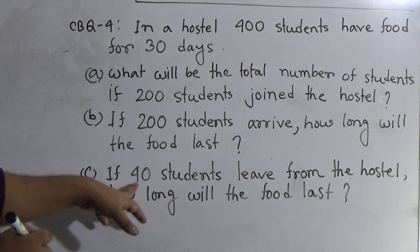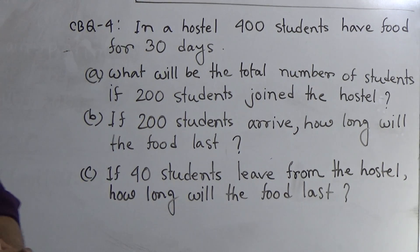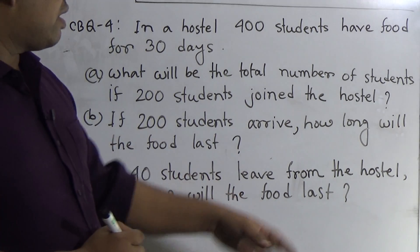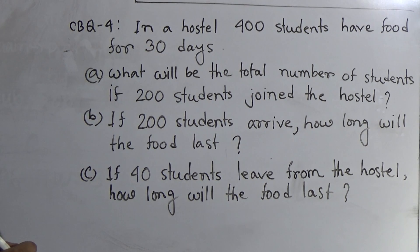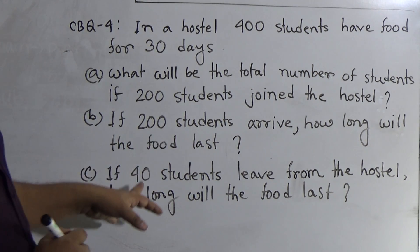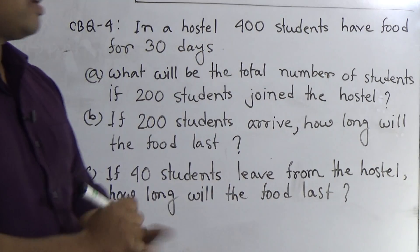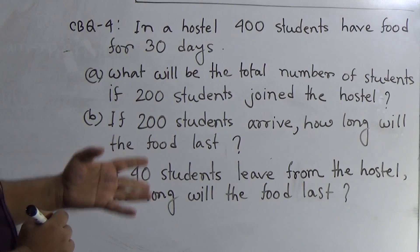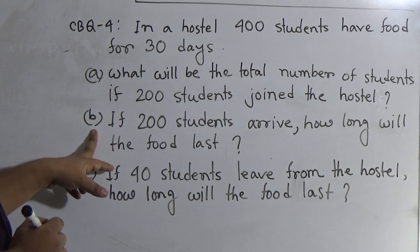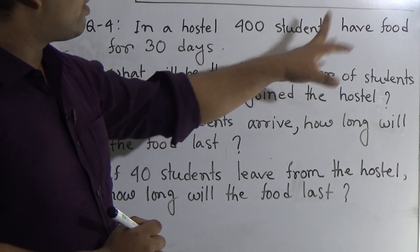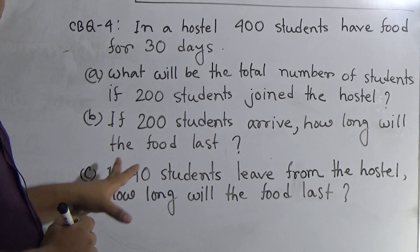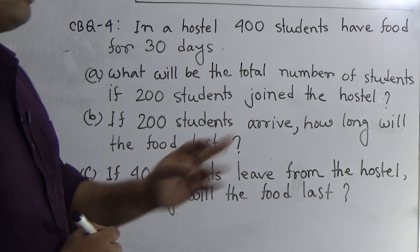Question number C: if 40 students leave from the hostel, how long will the food last? First we find out the number of students after 40 students leave. We subtract 40 from 400 to get the remaining students. Then we do the same thing as in question B: 400 students have food for 30 days, one student has food for how many days, and 360 students have food for how many days.